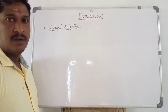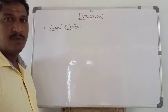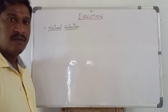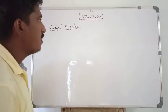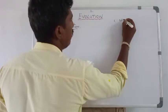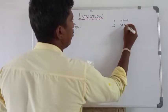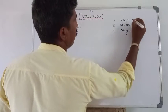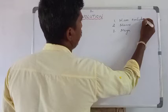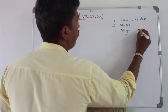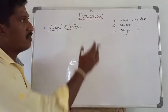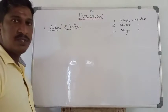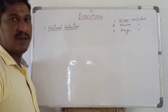Welcome everyone. I am going to explain about natural selection. In evolution we have three types: the first one is micro evolution, the second one is macro evolution, and the third one is mega evolution.